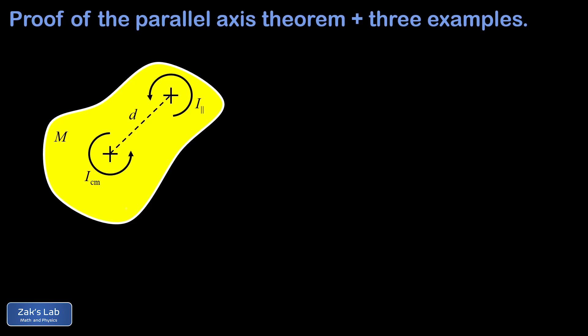The new rotation axis must be parallel to the original axis through the center of mass — both axes point directly out of the screen. If the two rotation axes aren't parallel, we can't use the parallel axis theorem. The moment of inertia about this parallel axis is given by the moment of inertia about the center of mass plus big M times d squared.